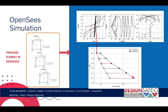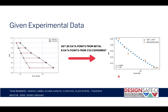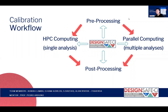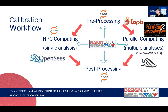The goal of this project is to reduce the error or gap between the plotted experimental data and simulated data. To achieve this, the first step is to get at least 20 data points from the six initial CSS data points. The calibration workflow is done entirely on the DesignSafe platform, including pre- and post-processing, HPC computing, and parallel computing. For pre- and post-processing we use Jupyter notebooks, and for HPC computing we use the high-performance computing Jupyter with the OpenSees package. For parallel computing, we use Tapis with Stampede to submit multiple analysis jobs.